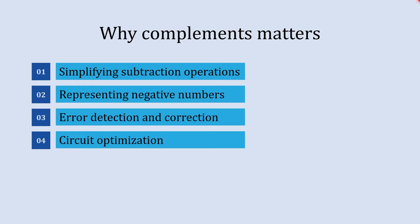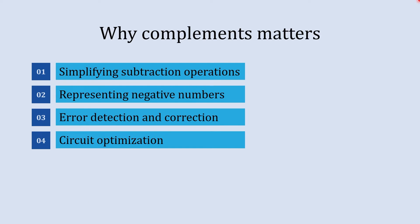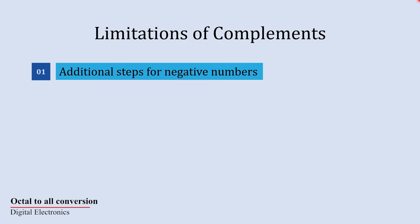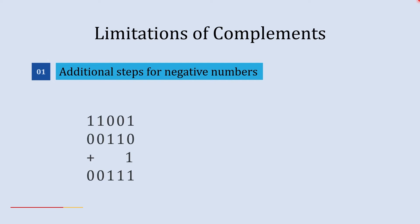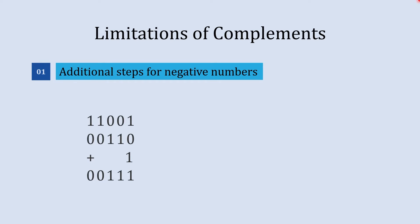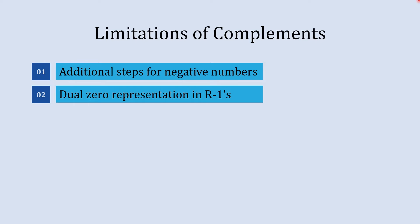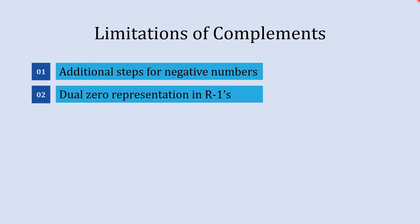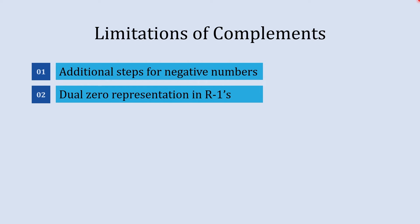Along with their importance, there are a few limitations of these complements. For negative numbers using r's complement, you need to perform an additional step of adding 1 after inverting all the bits. This extra operation can add complexity and overhead in certain arithmetic operations. Additionally, r-1's complement suffers from dual zero representation — both +0 and -0 — which introduces inconsistency and potential errors in calculations.